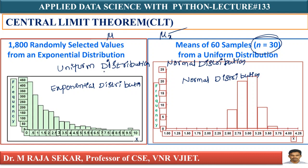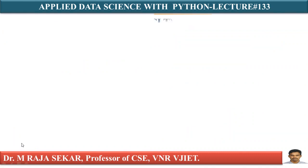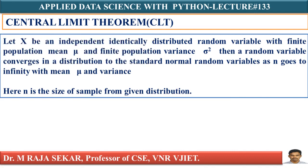All these scenarios I discussed in lecture number 132. Why am I discussing these concepts? Whatever may be the nature of the population, if you select any sample from the population and plot the sample mean, that will follow normal distribution. No matter what the shape of the population is, the distribution of the sampling distribution will be normal if n is very large. Now I have set a stage to understand the Central Limit Theorem.